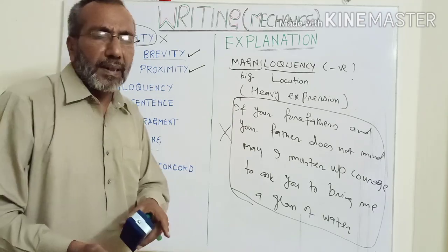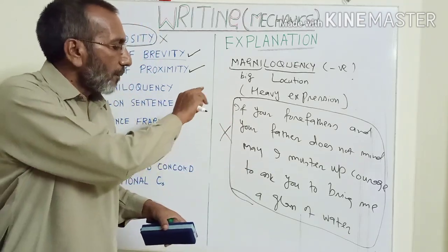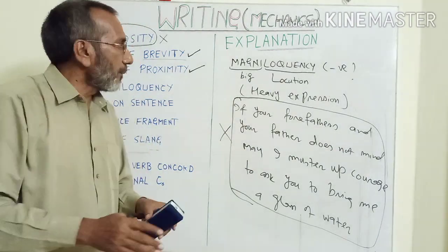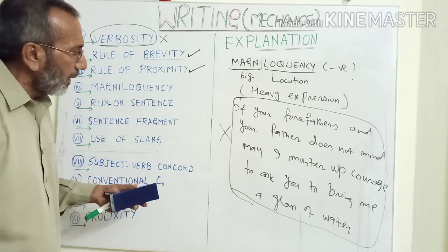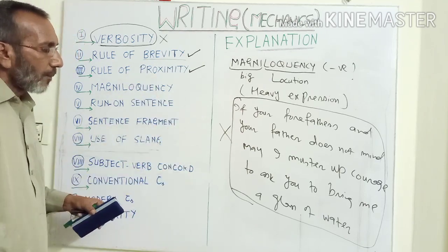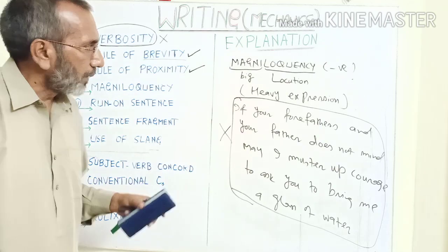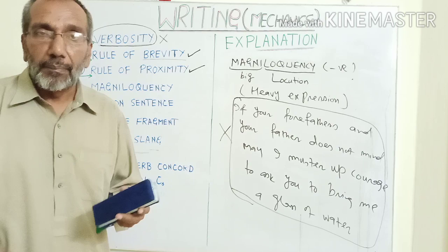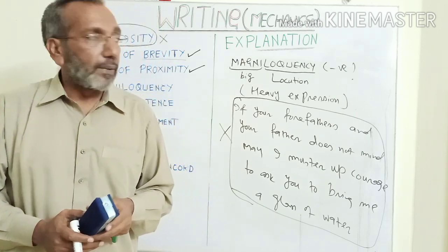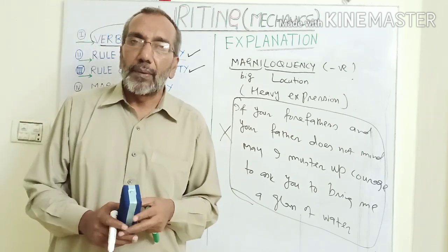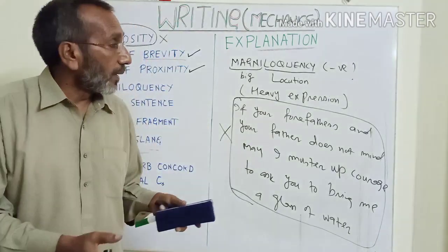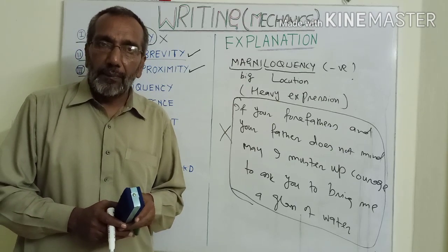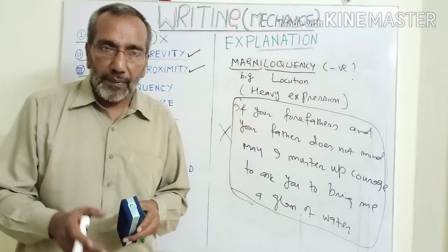So, magniloquency is something negative — you have to shun it, you have to avoid it at every cost. Sometimes wittingly or unwittingly we do this sort of thing. So you have to try your best to avoid it. I think for today it's enough — you might have got some idea. Inshallah, I will explain the remaining rules in the coming lecture very soon. Thank you very much for being so patient, and inshallah, I am positive you will have certainly got something. If there is still some difficulty, you can ask in the comments. Feel free to ask anything. Thank you very much. Take care.